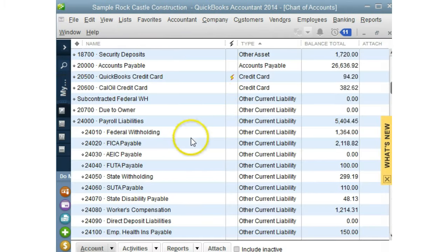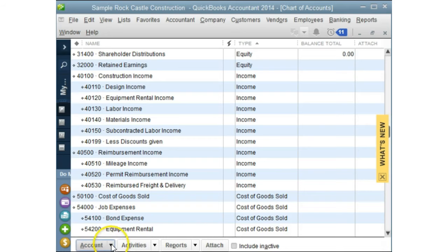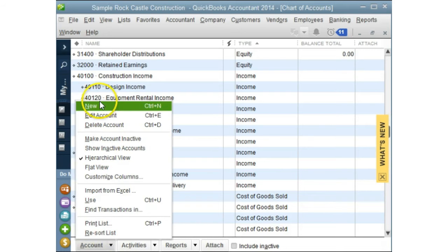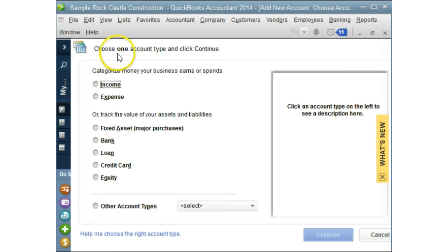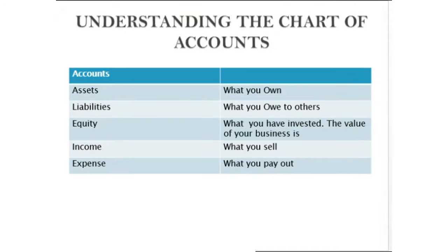As you can see, this is where all of our accounts are stored. When we create a new account, if we go to Accounts then New, QuickBooks is going to ask us to choose one account type and click Continue. There are five types of accounts that make up the chart of accounts and therefore make up your whole financial data. These accounts create the accounting equation which happens behind the scenes in QuickBooks — we'll talk about this a little later.